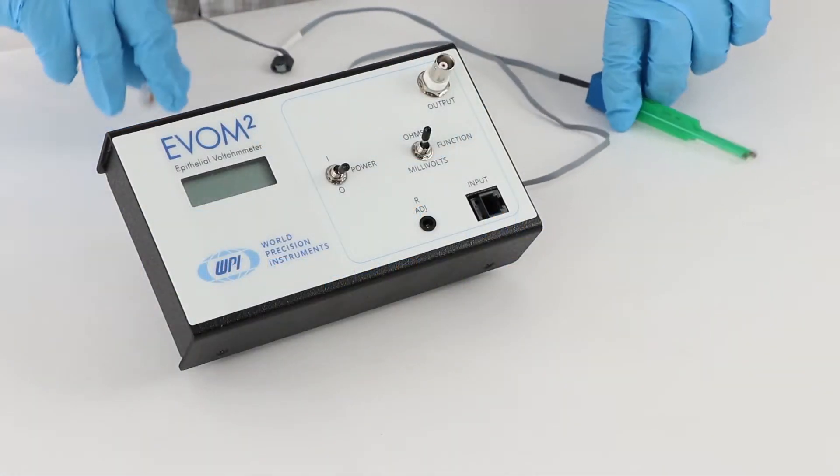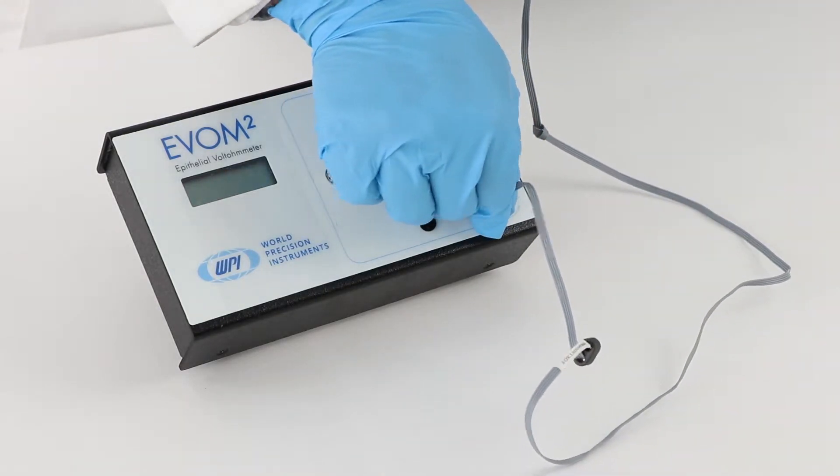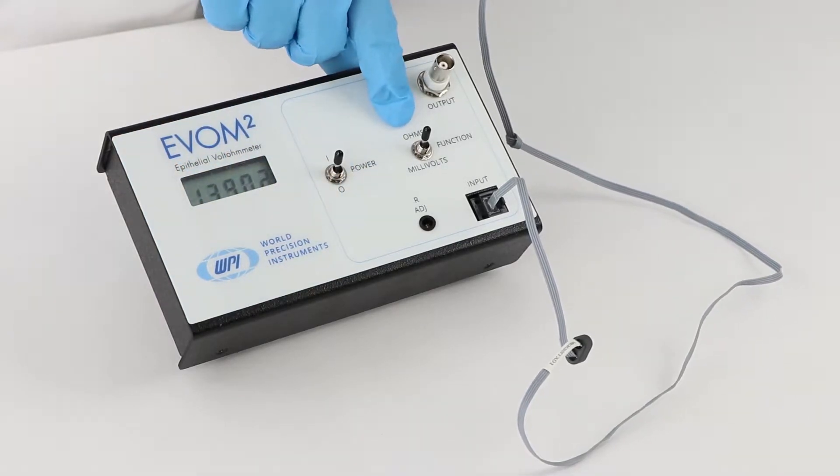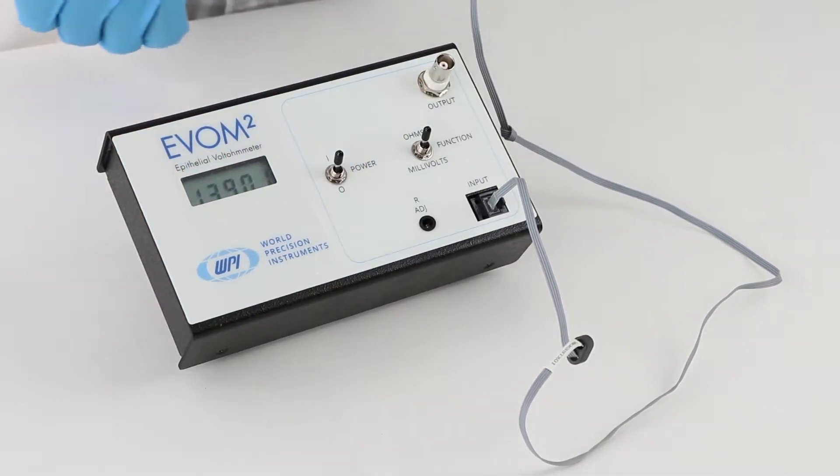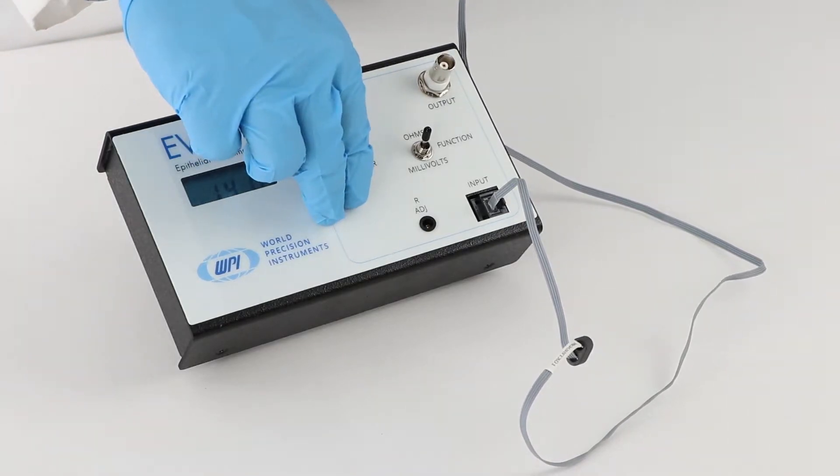First, you will need an EVORM II which supplies very low current, around 10 microamps, to obtain resistance measurements. Now I'm going to talk about different types of electrodes.